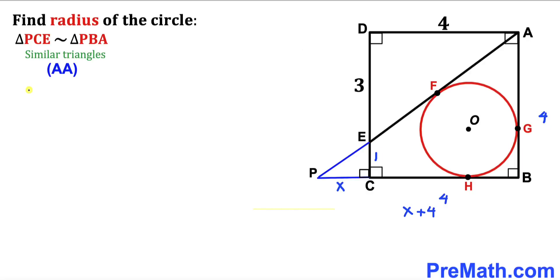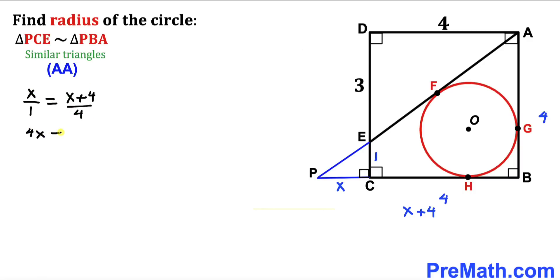Therefore I can write X divided by 1 equals X plus 4 divided by 4. Cross-multiplying gives us 4X equals X plus 4.